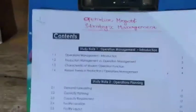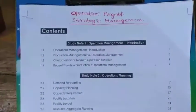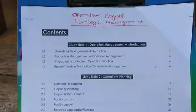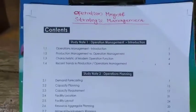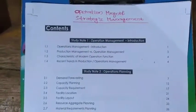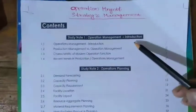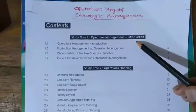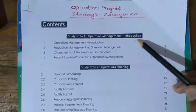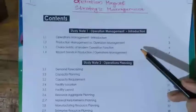In the second group, this is a scoring paper. The first chapter is the Introduction of Operation Management, which is also a scoring paper.